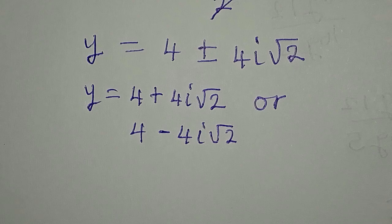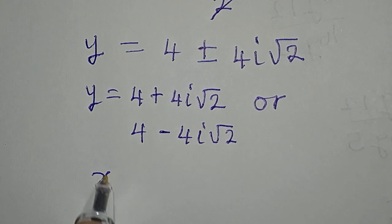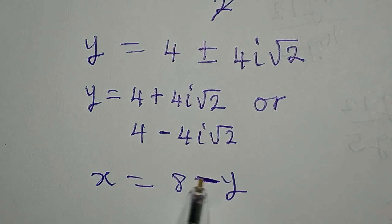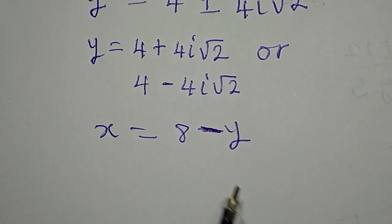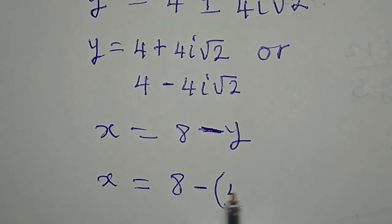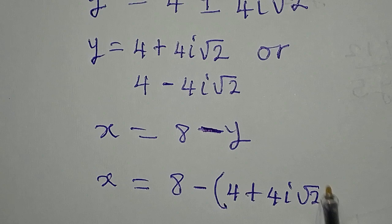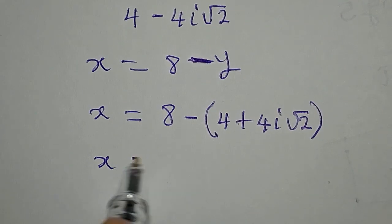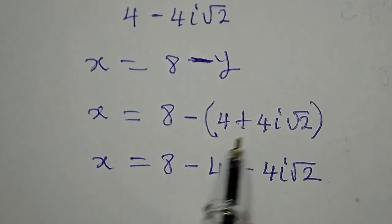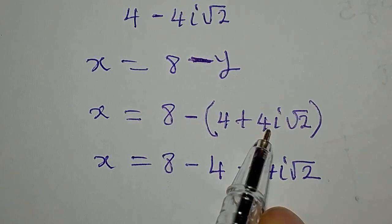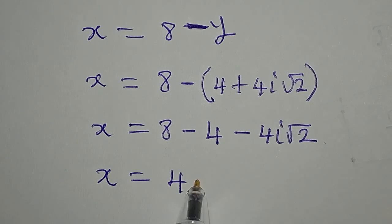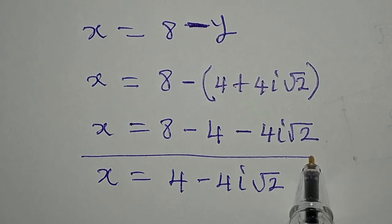Let's pick the first value of y and recall equation 3: x equals 8 minus y. Substituting the first value gives x equals 8 minus (4 plus 4i root 2). Opening the bracket: x equals 8 minus 4 minus 4i root 2, which gives x equals 4 minus 4i root 2.